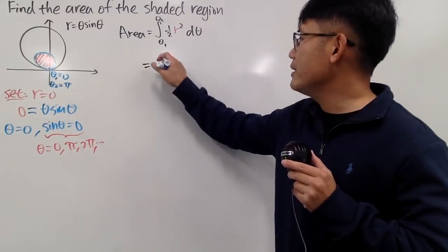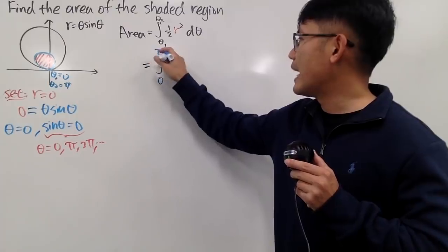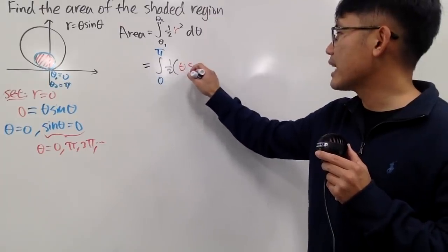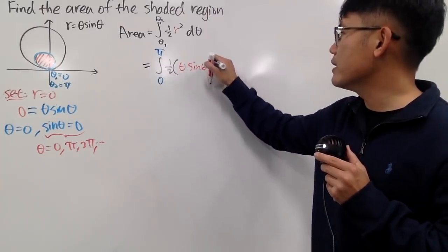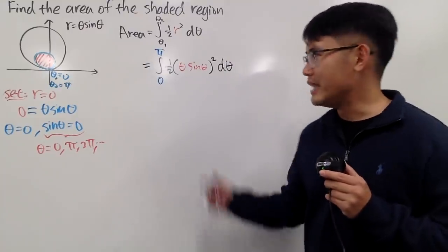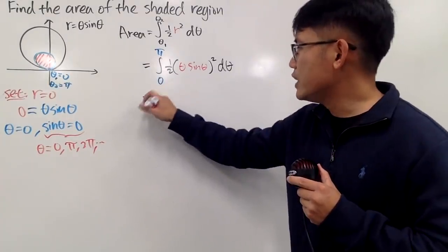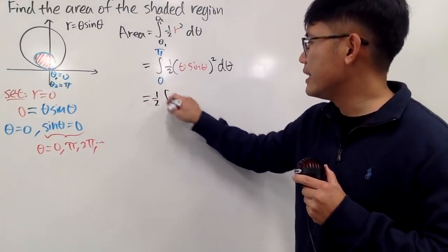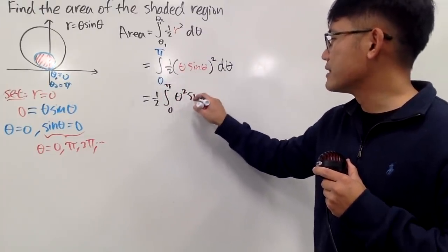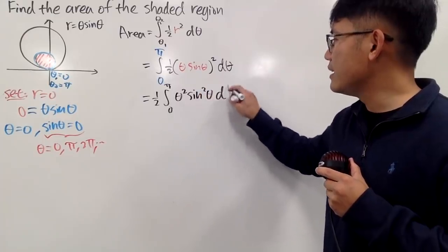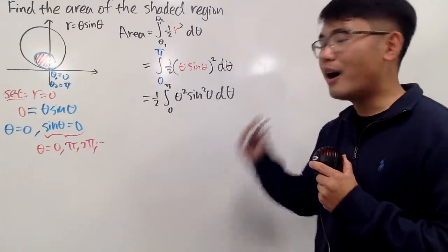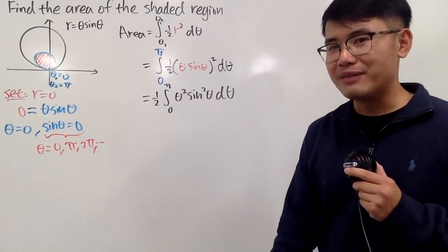So we have to integrate from 0 to pi: one half times the integral of (theta times sine theta) squared d theta. We can bring the one half to the front, giving us the integral from 0 to pi of theta squared times sine squared theta d theta. Keep in mind — do not bring theta squared outside, because we are in the theta world and theta is the variable.